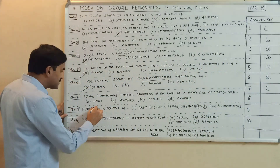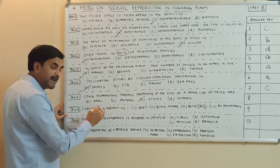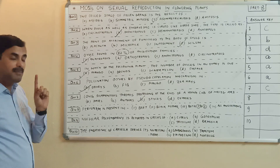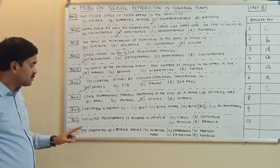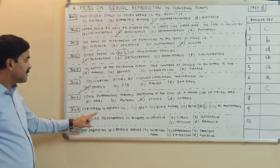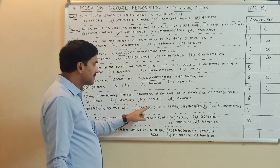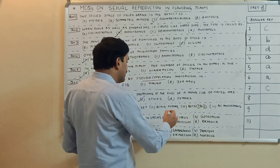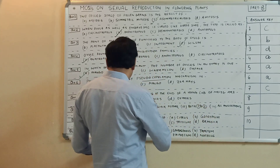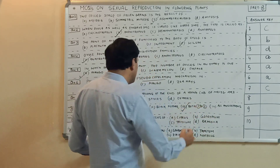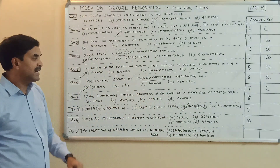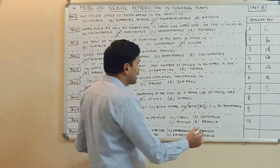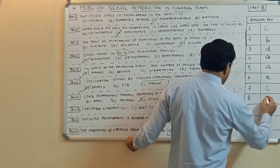Now, perisperm — what is perisperm? Perisperm is the remnant of the nucellus. Perisperm is present in beet, black pepper, both, or all angiosperms? It is clearly given in your NCERT that perisperm is present in beet as well as black pepper. So the answer must be both first and second. Question number eight, answer is C.